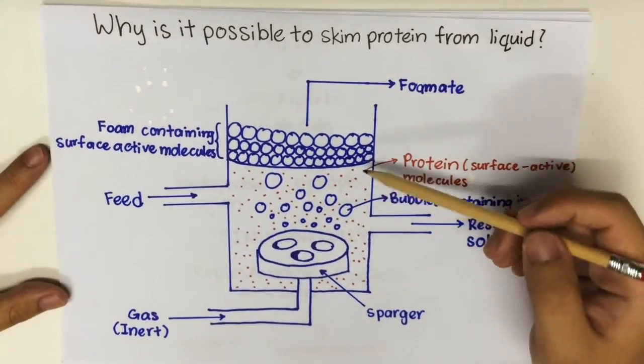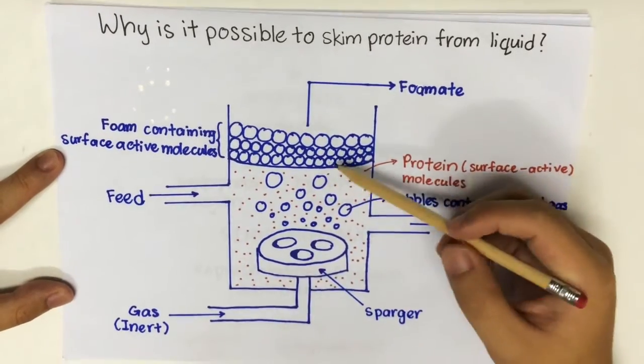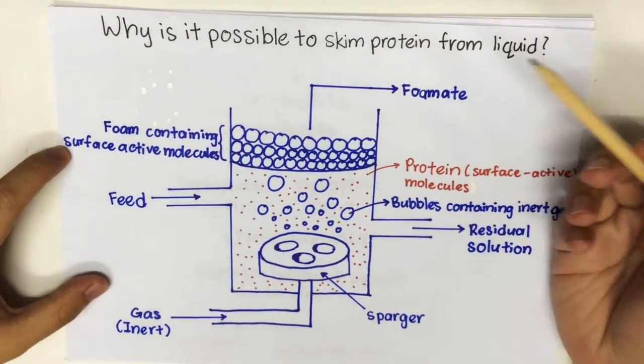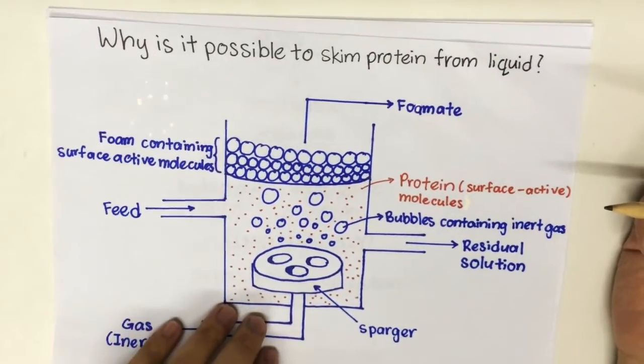Protein skimming is the removal of protein molecules from the solution with the aid of foam. How is it possible? Now, let's look at what type of molecules are protein.